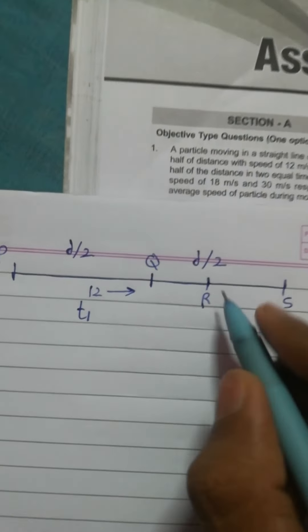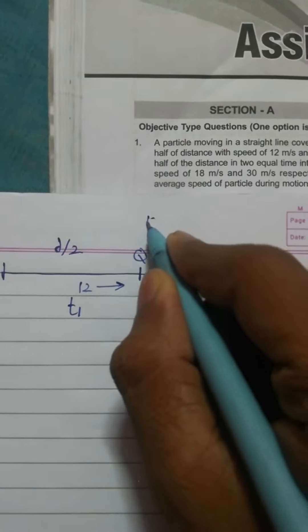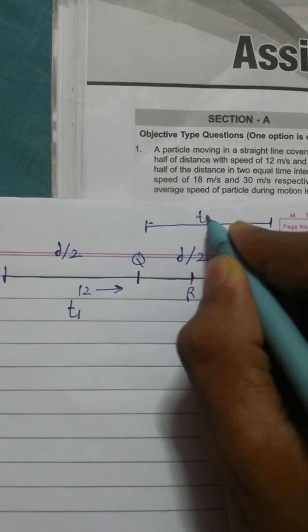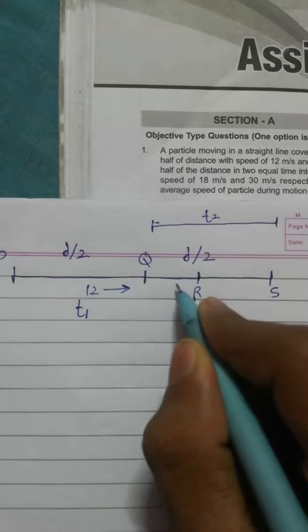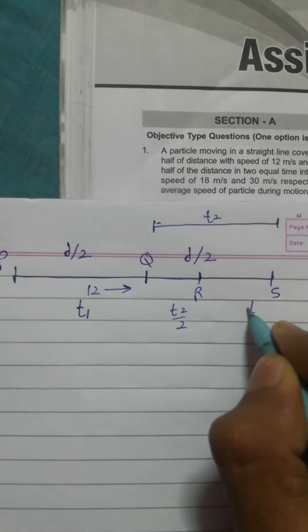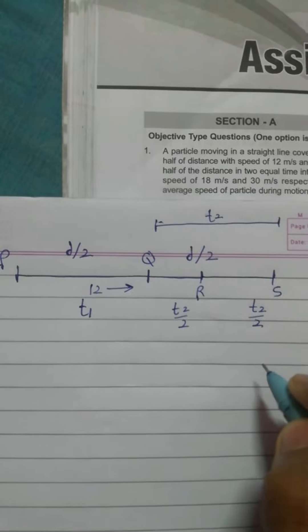Here T1, and we will consider that time from Q to S is T2. So this QR would be T2 by 2, and this one too would be T2 by 2.